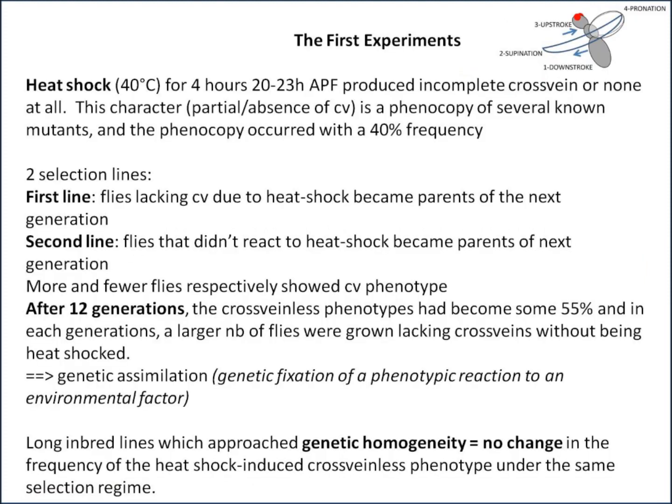Waddington's first experiments involved heat shocking Drosophila at 40 degrees for about 4 hours, 20 to 23 hours APF (after puparium formation), which produced incomplete cross veins or none at all. This character — partial or complete absence of cross veins — is a phenocopy of several known mutants, and occurred with 40% frequency. Waddington then started two selection lines: in the first, flies that lacked cross veins due to heat shock became parents of the next generation; in the second, flies that didn't react to the heat shock became parents. The result was that more and fewer flies, respectively, showed cross-veinless phenotypes.